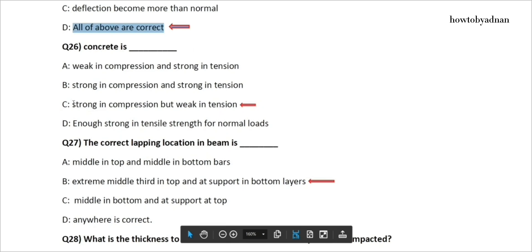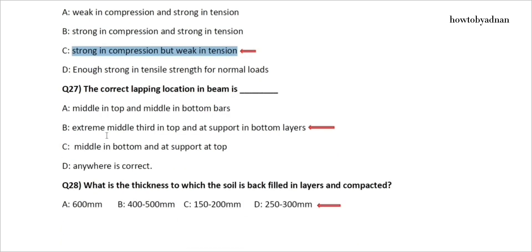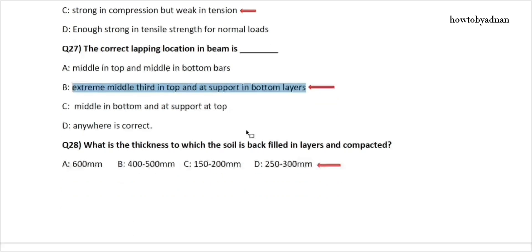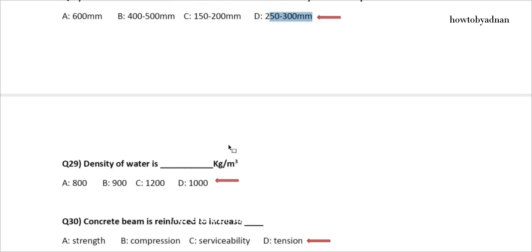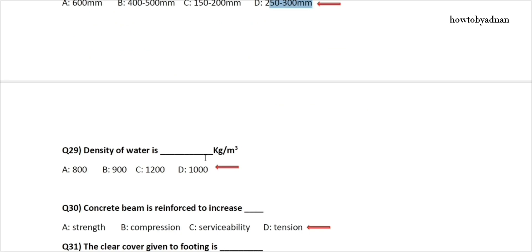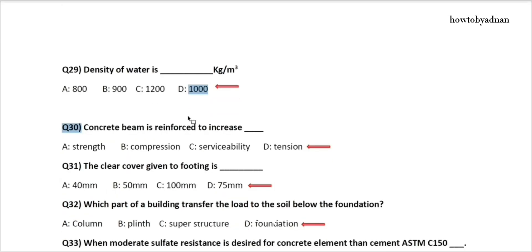Question 26: Concrete is? The answer is option C: Strong in compression but weak in tension. Question 27: The correct lapping location in a beam is? The answer is option B: Extreme middle third in top and at support in bottom layers. Question 28: What is the thickness to which soil is backfilled in layers and compacted? The answer is option D: 250 to 300 millimeters. Question 29: The density of water is how many kg per cubic meter? The answer is option D: 1,000.